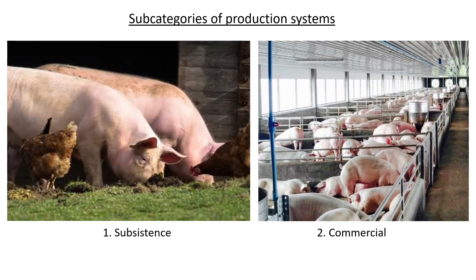Each production system also has two sub-categories: subsistence and commercial, for both intensive and extensive. Subsistence refers to small-scale farming — for example, one farmer might only have two pigs, while a commercial operation, as shown in the picture, has many more animals in large piggery units, because commercial farming aims to sell for profit.